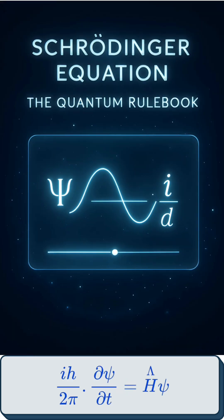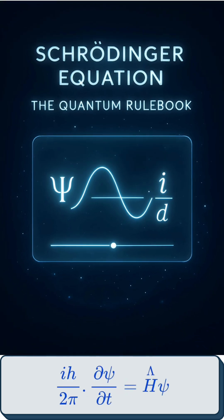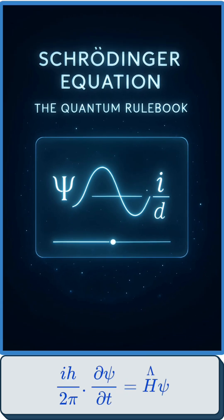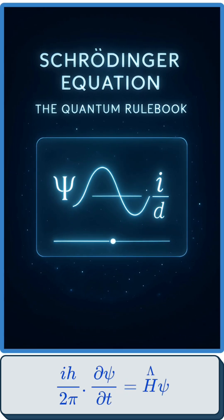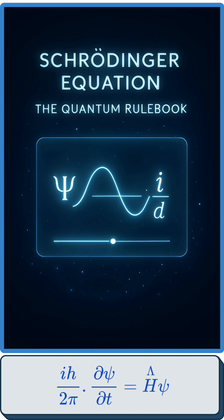The Schrödinger equation is like a master rulebook. It tells us how the wave function changes over time, helping us predict how these quantum waves behave. Think of it as the ultimate guide to quantum dance.